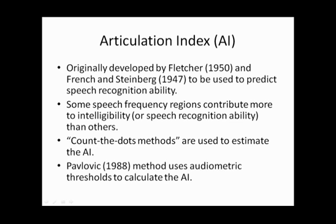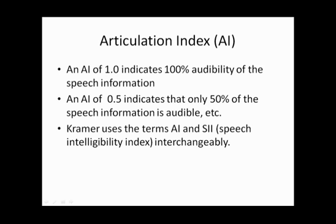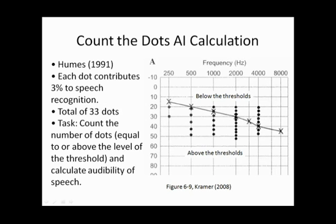Chas Pavlovich in 1988 published a method using audiometric thresholds to calculate the AI. An AI of 1 indicates 100% audibility of the speech information; an AI of 0.5 indicates only 50% of the speech information is audible. Kramer uses the terms AI and SII — speech intelligibility index — interchangeably. Larry Humes published the paper with the count-the-dot method. Each dot contributes 3% to speech recognition, with a greater collection of dots in the higher frequencies, reflecting their greater contribution to speech understanding.